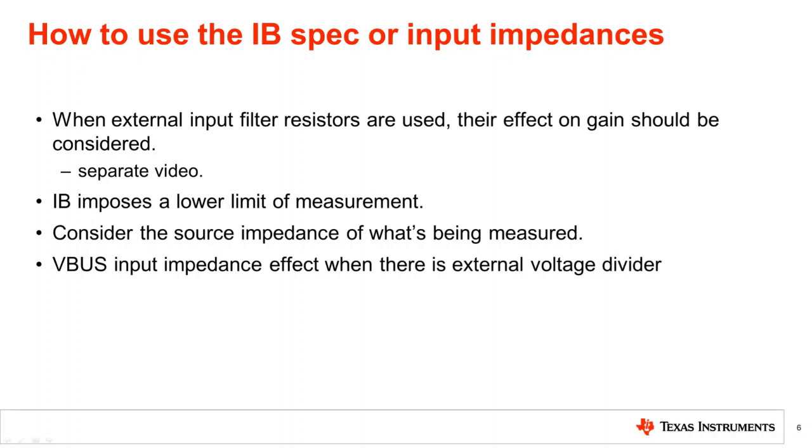As pointed out before, the shunt voltage is typically on the order of a few tens of millivolts. Therefore, the difference between IB plus and IB minus is generally negligible.